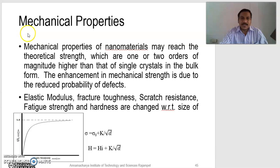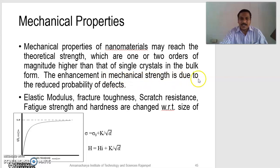First, we discuss the mechanical properties. Mechanical properties of nanomaterials may reach the theoretical strength, which are one or two orders of magnitude higher than that of single crystals in the bulk form. The enhancement in mechanical strength is due to the reduced probability of defects. By decreasing the grain size into nanoscale range, the mechanical strength will be increased.